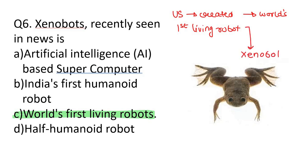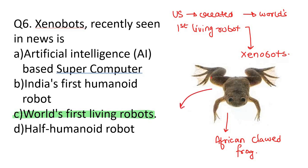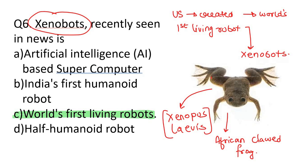These are tiny robots built from the cells of the African clawed frog. The robots have been named after the species of aquatic frog Xenopus laevis — and on that name, the name Xenobots was kept. These are completely biological machines built from scratch.